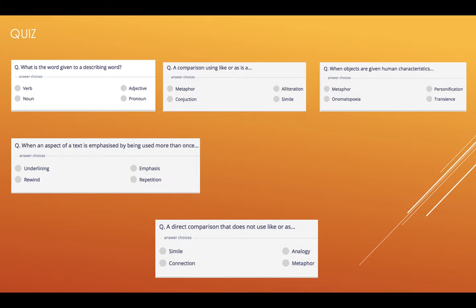Number five, a direct comparison does not use like or as. Simile, analogy, connection or metaphor.